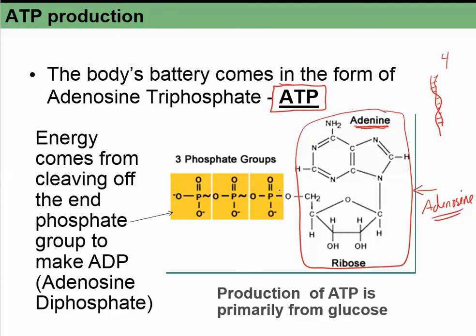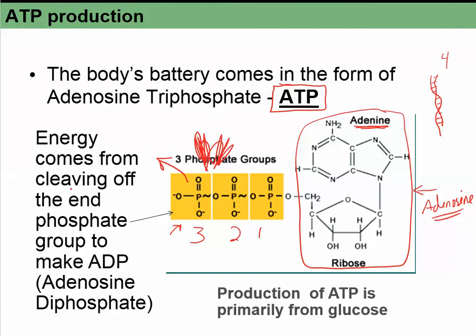Adenosine is combined with three phosphate groups. It takes a lot of energy to put on the third phosphate — that's the one holding the energy we use. If we pop that last phosphate off, it releases the energy. Energy comes from cleaving off the end phosphate group to make ADP. We call that process hydrolysis: ATP → ADP + inorganic phosphate (Pi).